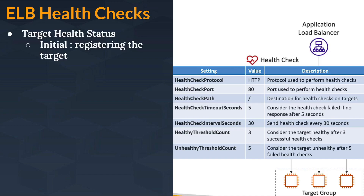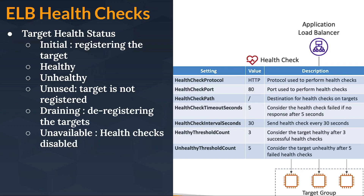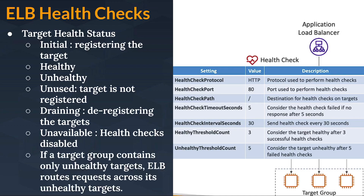Target health statuses: 'initial' means registering the target; 'healthy' means your target is healthy; 'unhealthy' means your target isn't responding; 'unused' means the target isn't registered yet; 'draining' means you are deregistering the targets; 'unavailable' means health checks are disabled. If a target group contains only unhealthy targets, the elastic load balancer routes requests across its unhealthy targets rather than dropping them.